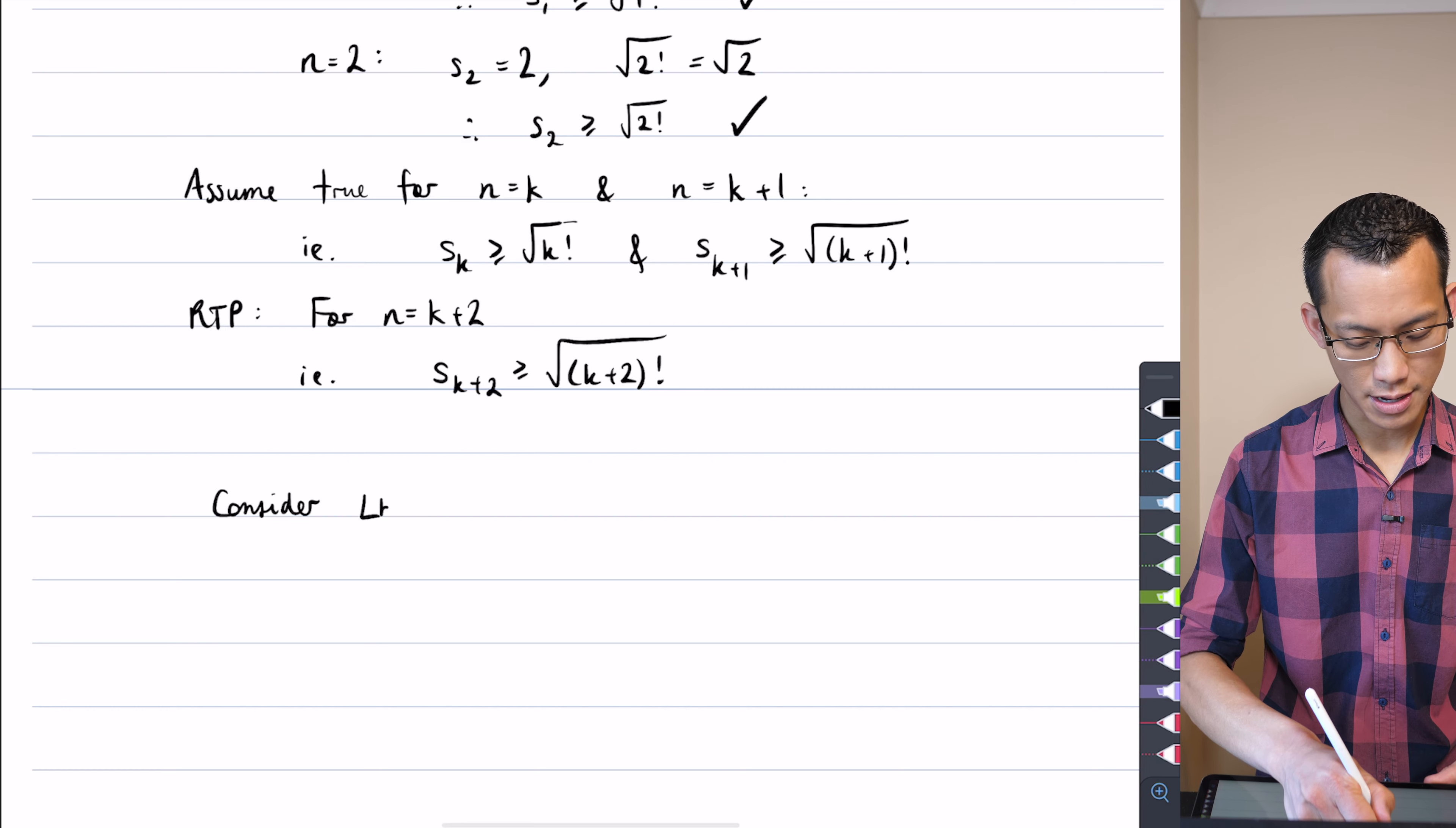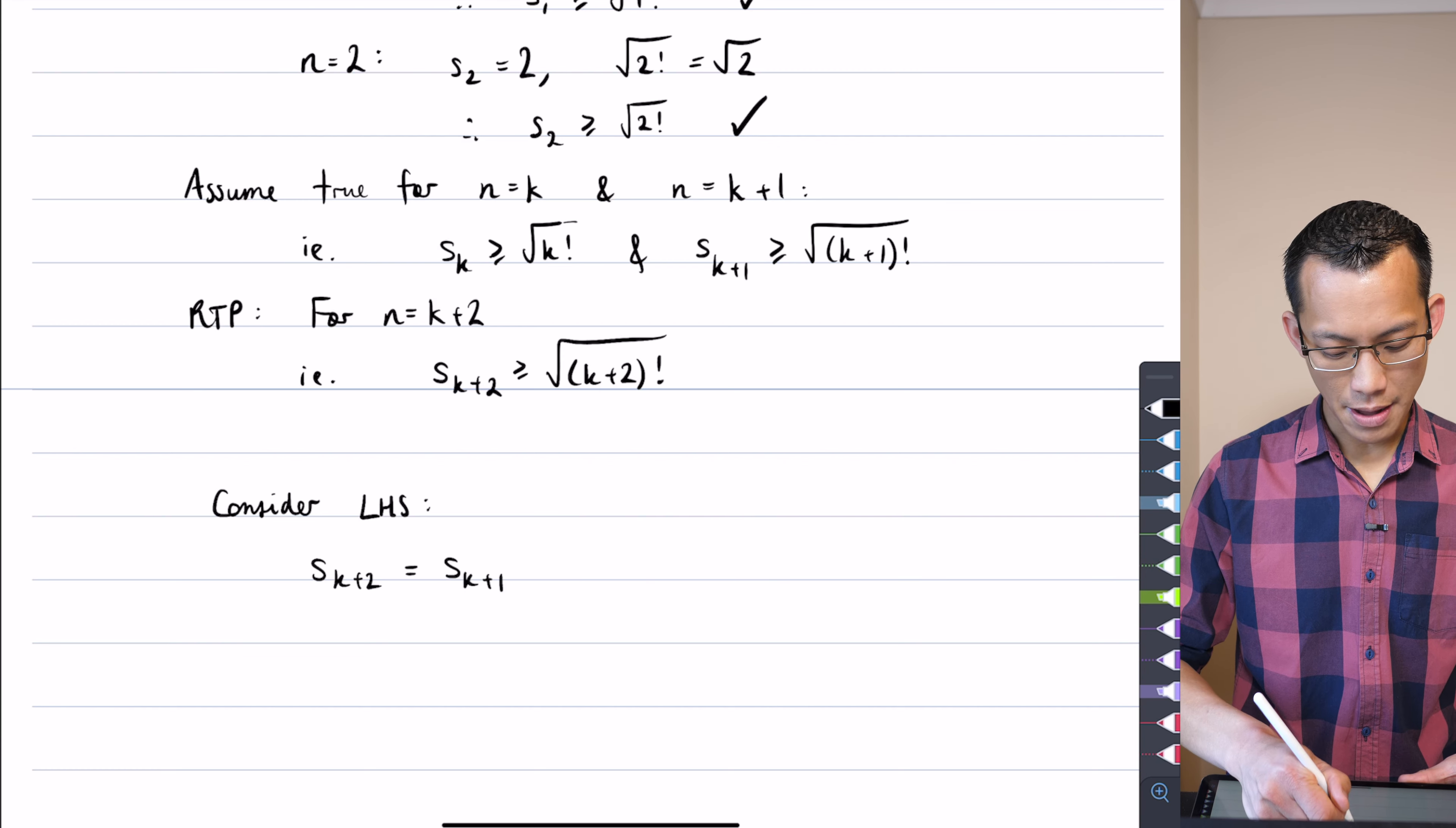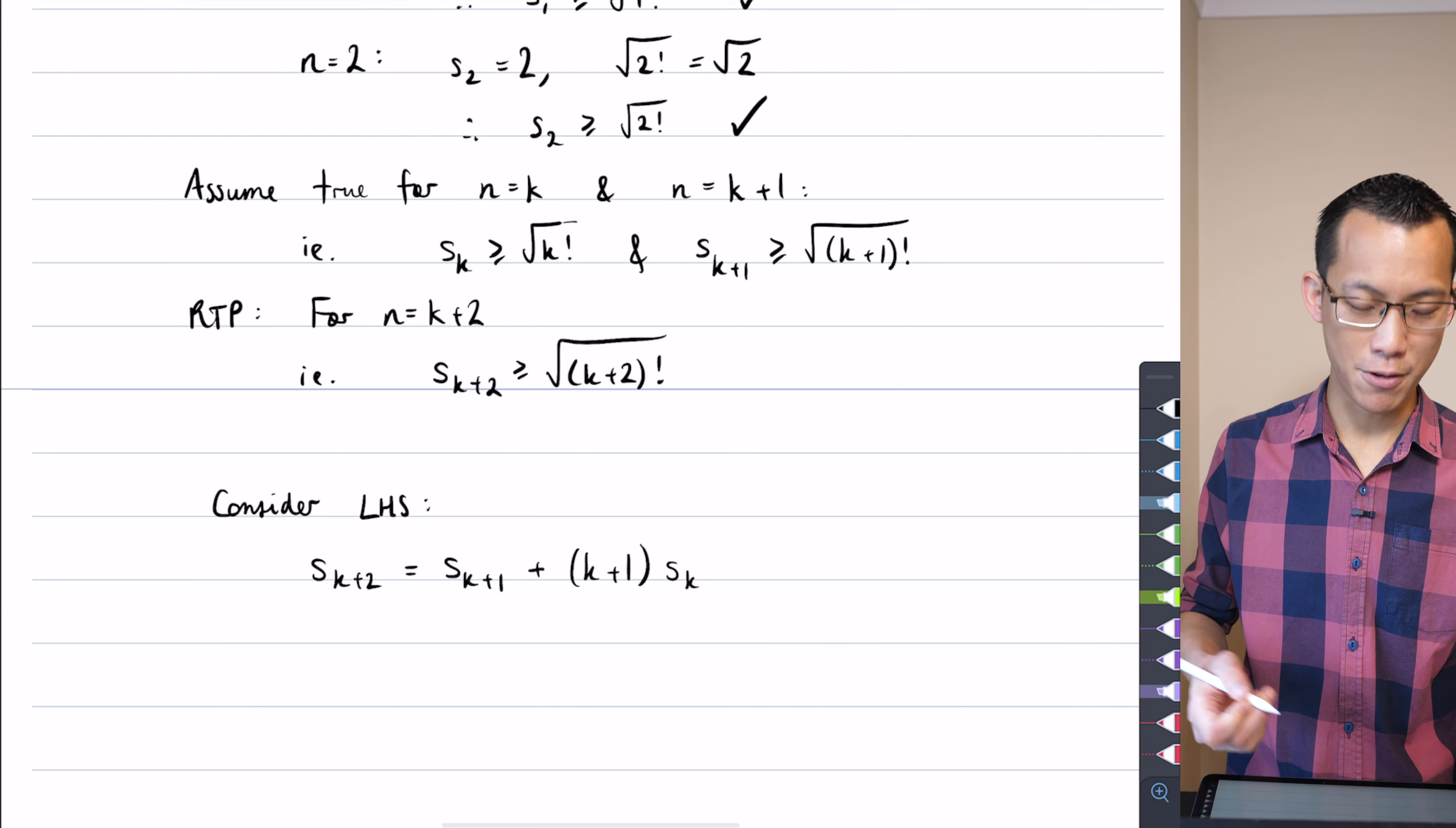So I'm going to consider the left-hand side, it's equal to s of k plus 2. Well, from the question, by definition, you look at the previous term, that's s k plus 1, and then you multiply by that same subscript, and then you multiply that by the term before. So here was the previous term, and there was the term before that.